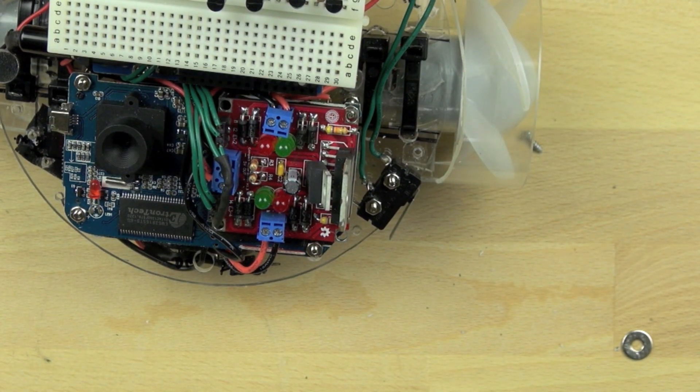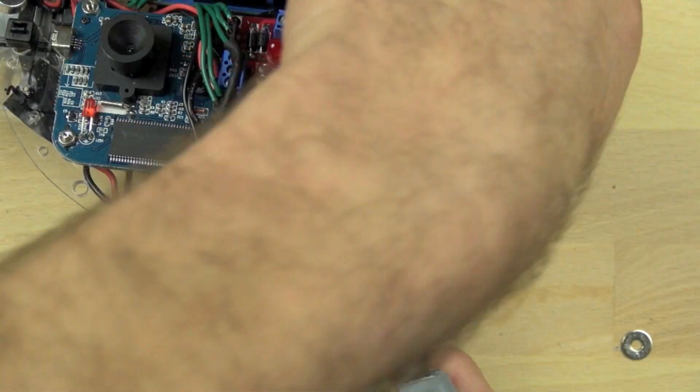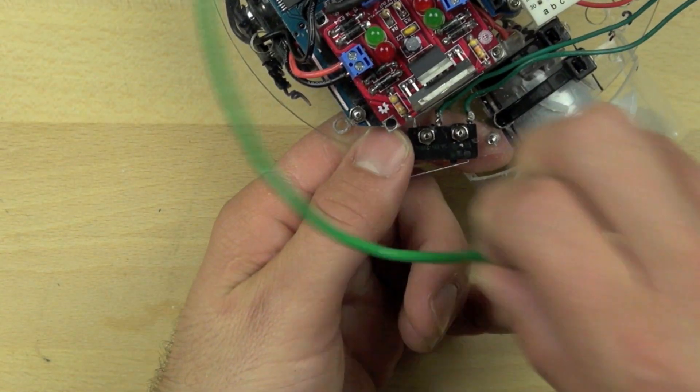But once you get the wire bent correctly, it'll trigger the switch every time and it'll extend the reach of that switch. So you only need to use one switch instead of multiple ones.